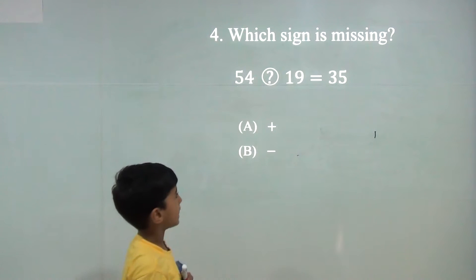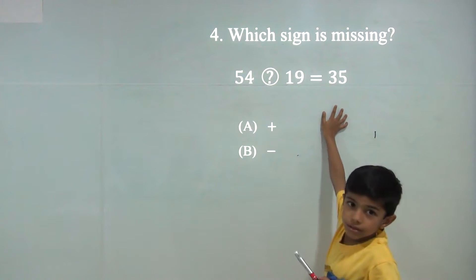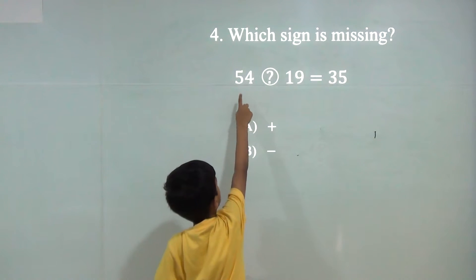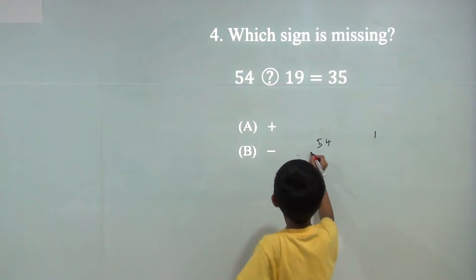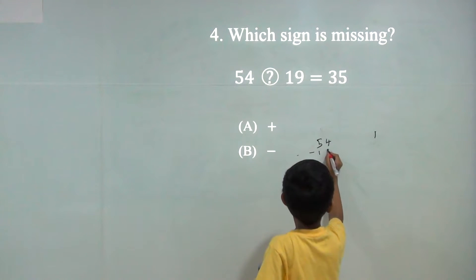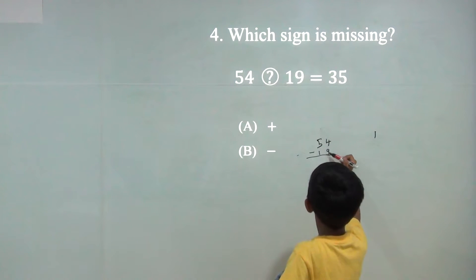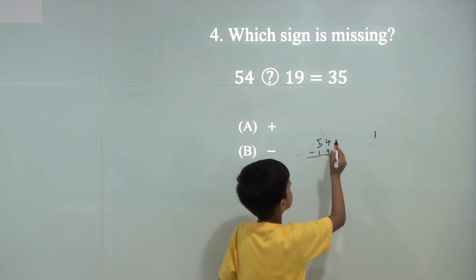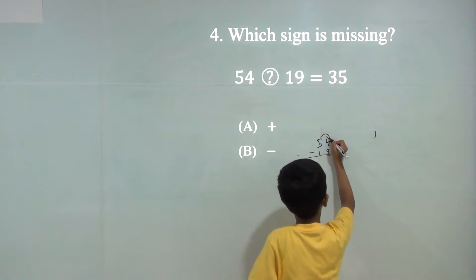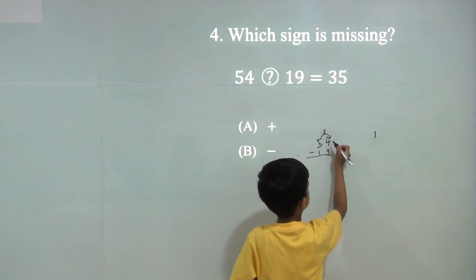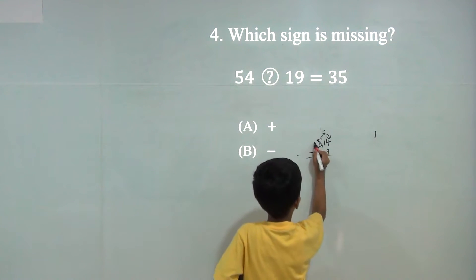54 minus 19, because there is a smaller number than what number is here. So we cannot subtract. Here is a smaller number than what number is here, so we cannot subtract. So we will do carry borrow. So it will become 14. Now 5 will become 4.